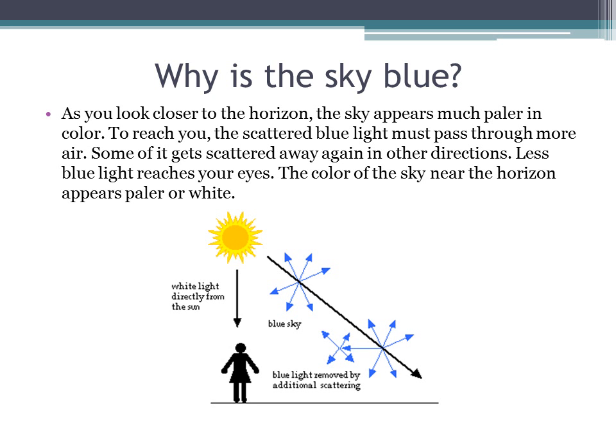As you look closer to the horizon, the sky appears much paler in color. To reach you, the scattered blue light must pass through more air. Some of it gets scattered away again in other directions. Less blue light reaches your eyes. The color of the sky near the horizon appears paler or white.